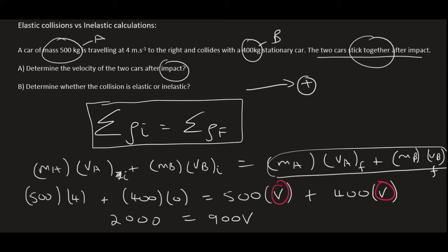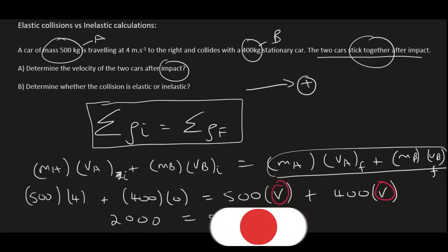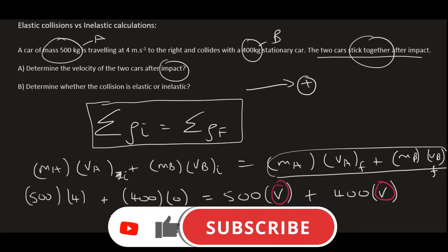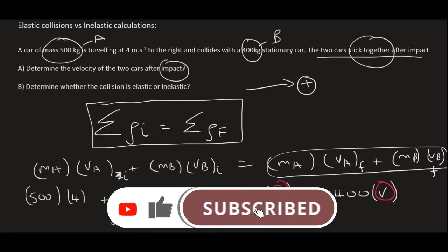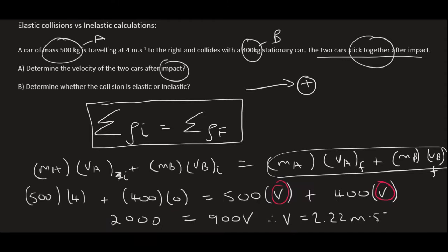Always make sure that that is the case. And so we simply divide by 900. Therefore, velocity of both of those objects is going to equal 2.22 meters per second. And because I got a positive answer and I chose right as positive, we're going to say to the right. So the first answer is 2.22 meters per second to the right.